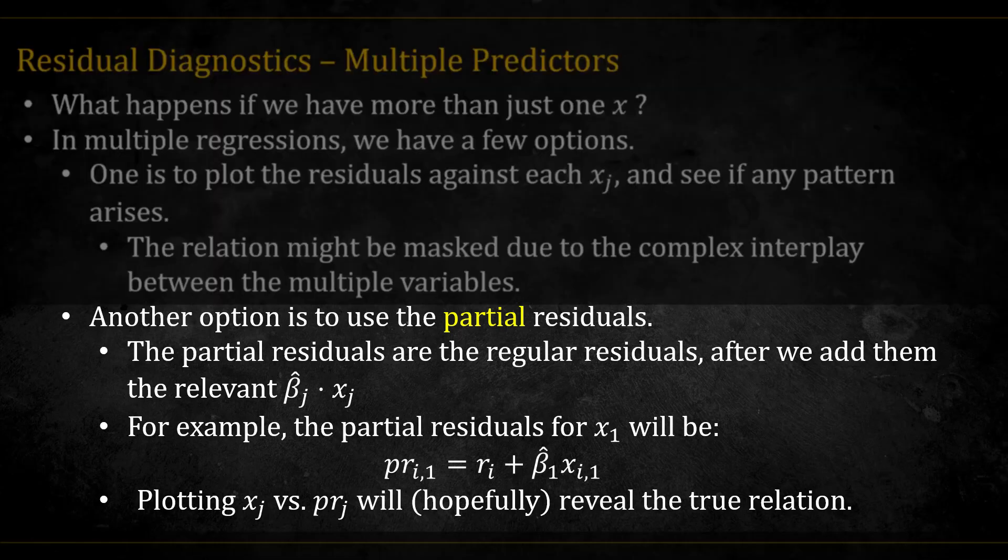Another option is to use the partial residuals. These are the regular residuals after we add to them the relevant predictors. For example, the partial residuals of x1 are defined as follows. Plotting the partial residuals against their corresponding x should hopefully reveal the true relation between that x and y, since we are essentially removing the effects of the other variables.